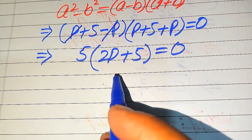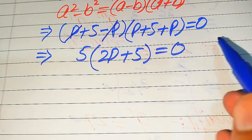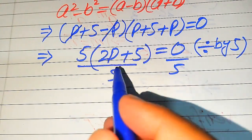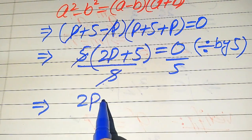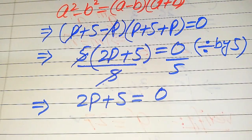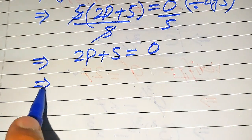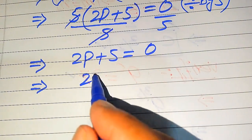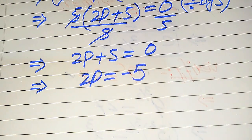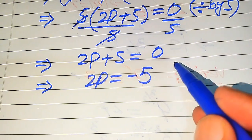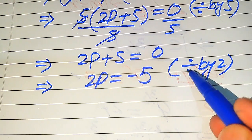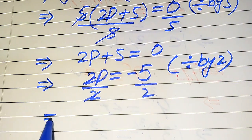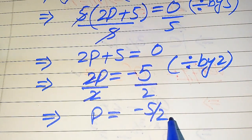Because we are solving for the values of p, we first need to remove the 5 from the left hand side by dividing both sides by 5. When we divide both sides by 5, the 5 cancels out and we obtain 2p+5 = 0. From here we move +5 to the right hand side, giving 2p = −5. Then dividing both sides by 2, we get p = −5/2.